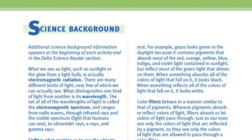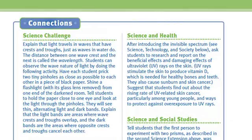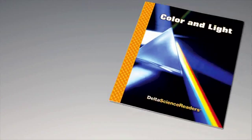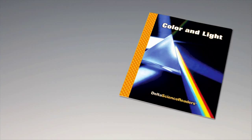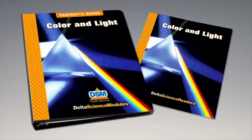To conclude the activity, collect the color wheels and discard the toothpicks. Wash the mixing trays and dropper bottles. Return all the materials and the dropper bottles filled with blue, red, and yellow colored water to the kit. For science background, reinforcement activities, curriculum connections, and information about the Delta Science Reader, please consult your DSM Teacher's Guide.